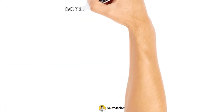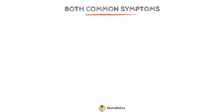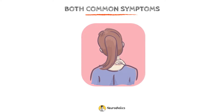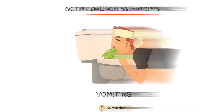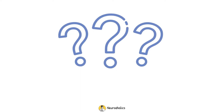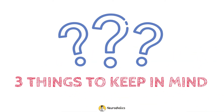Patients with tuberculous meningitis or bacterial meningitis typically present with similar symptoms, including a stiff neck, headache, fever, and vomiting. So, how should we tell them apart? Here are three things to keep in mind.